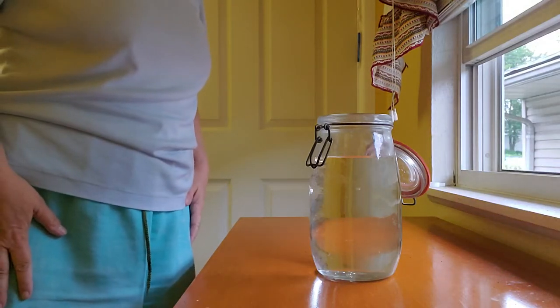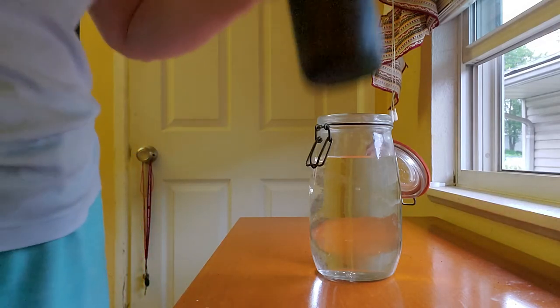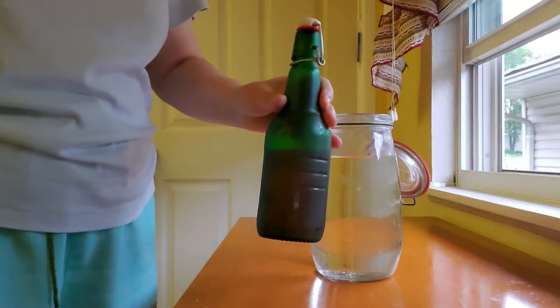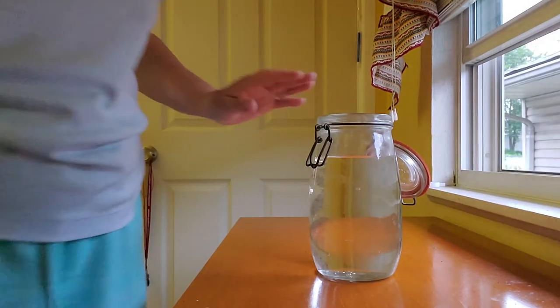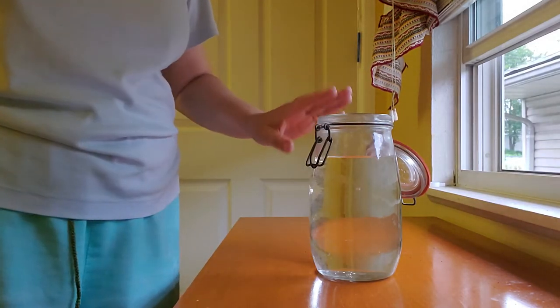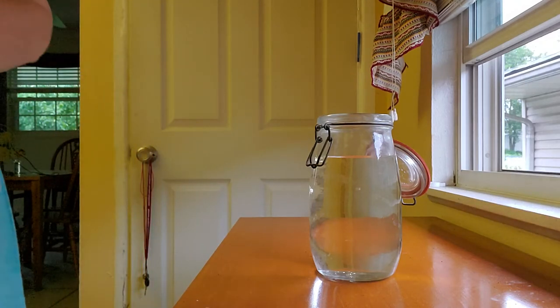So I'm going to show you how I make what I call new country wine. This is the brewed mixture. I start out with water and I've aired this off for one day to get the chlorine off of it so it doesn't inhibit the fermentation.